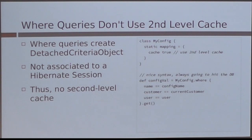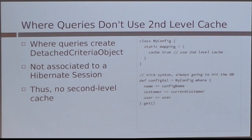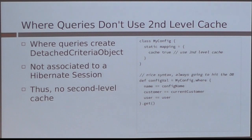This one I was quite surprised about, and I don't believe there's any documentation on it: how many people have used the where approach to writing queries? Are you using second-level caching with that? Where queries are newer in Grails — it's a nicer syntax — but because it uses a detached criteria object, it essentially bypasses the second-level cache. It seems like it should definitely come with a warning in the Grails docs: 'Where queries are really cool — by the way, they don't work with the second-level cache.'